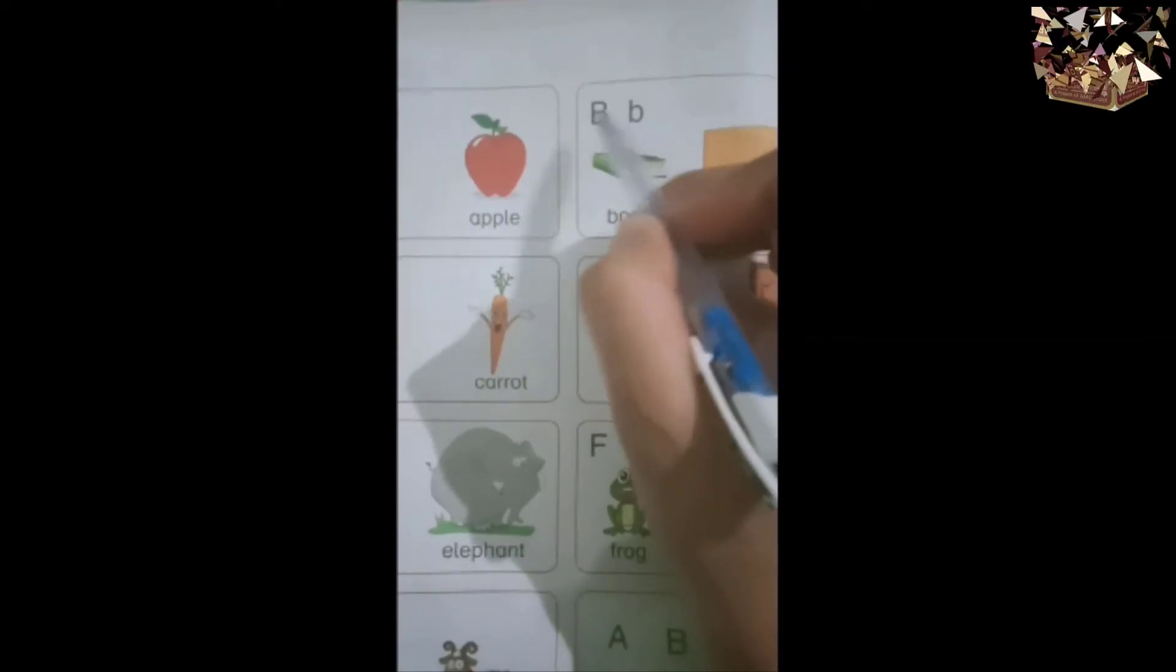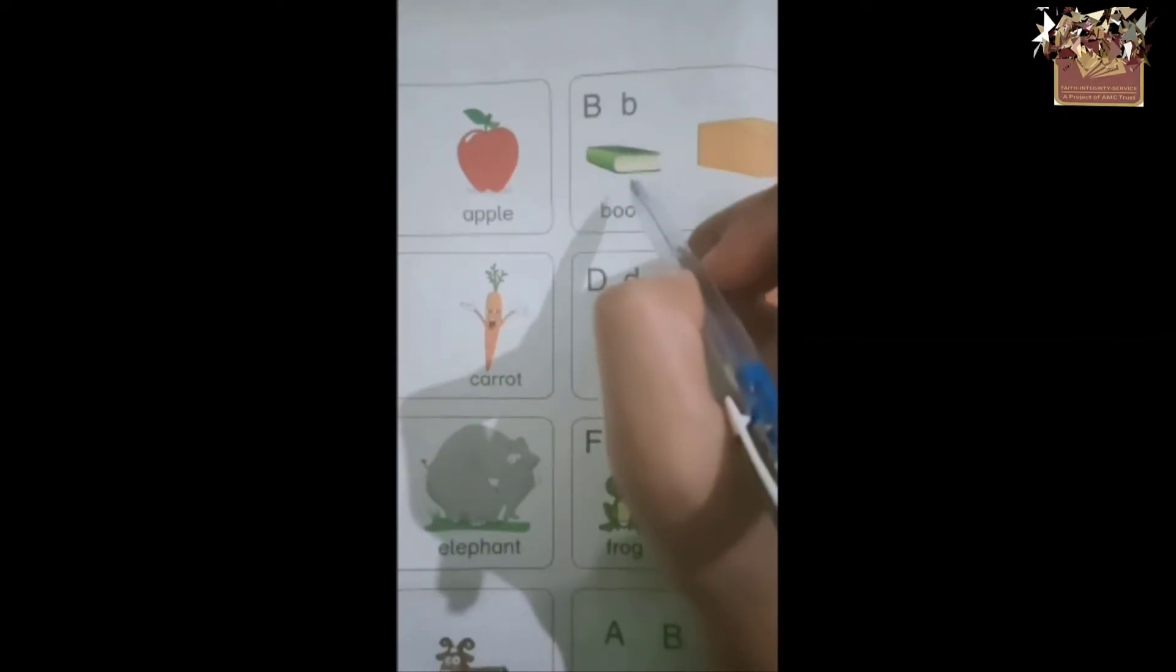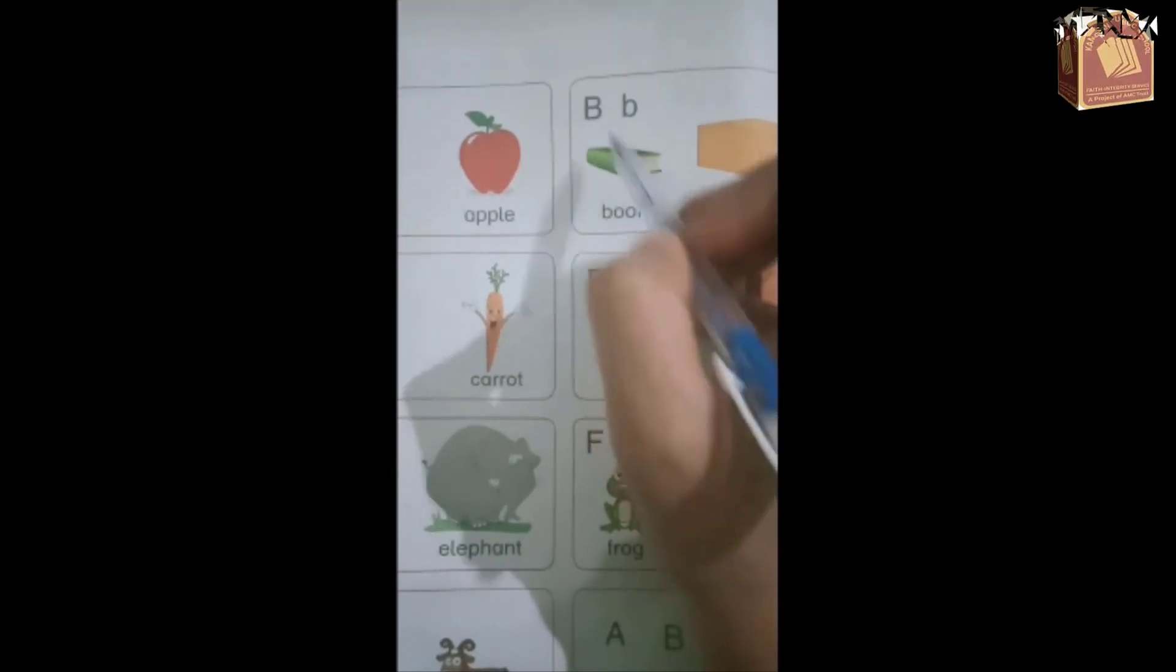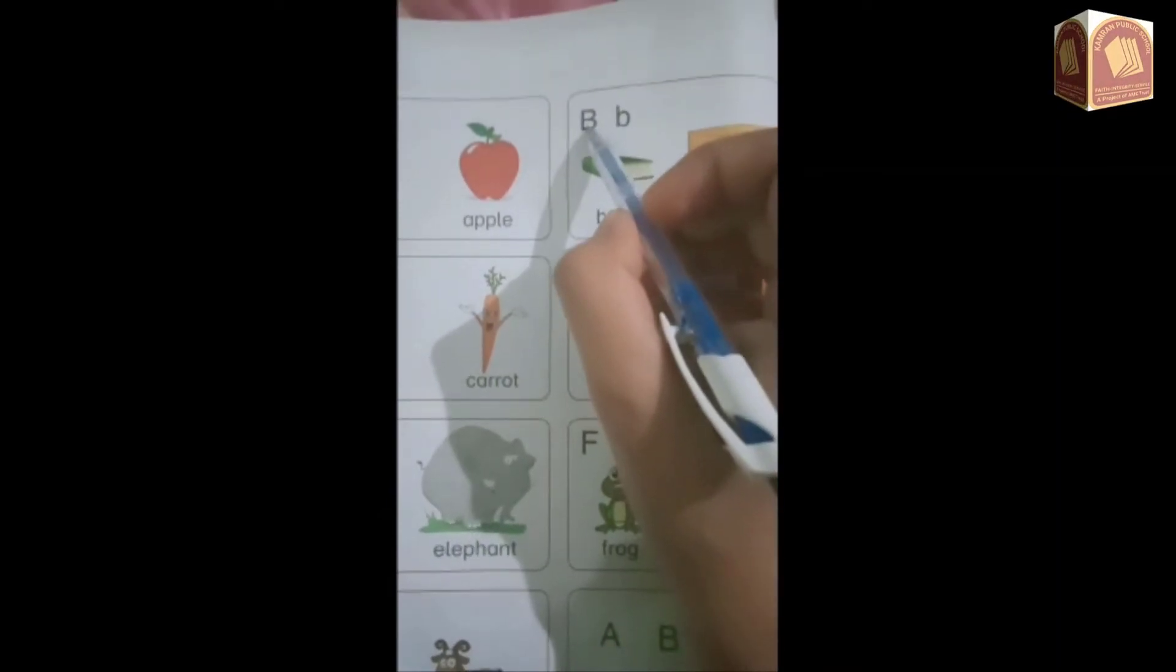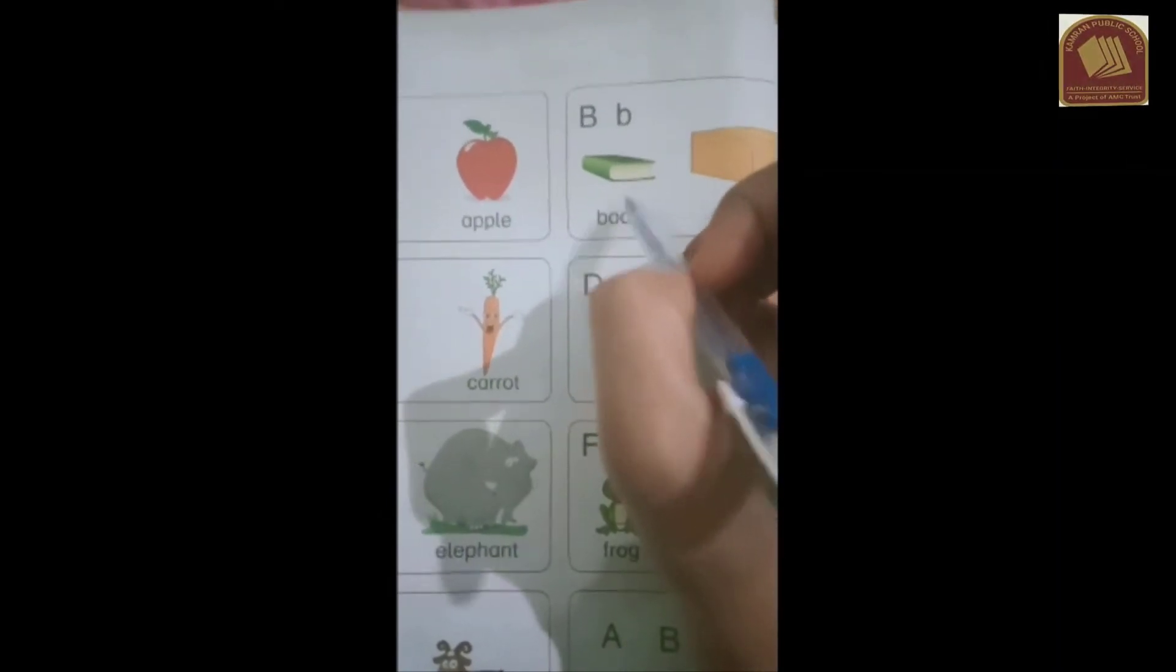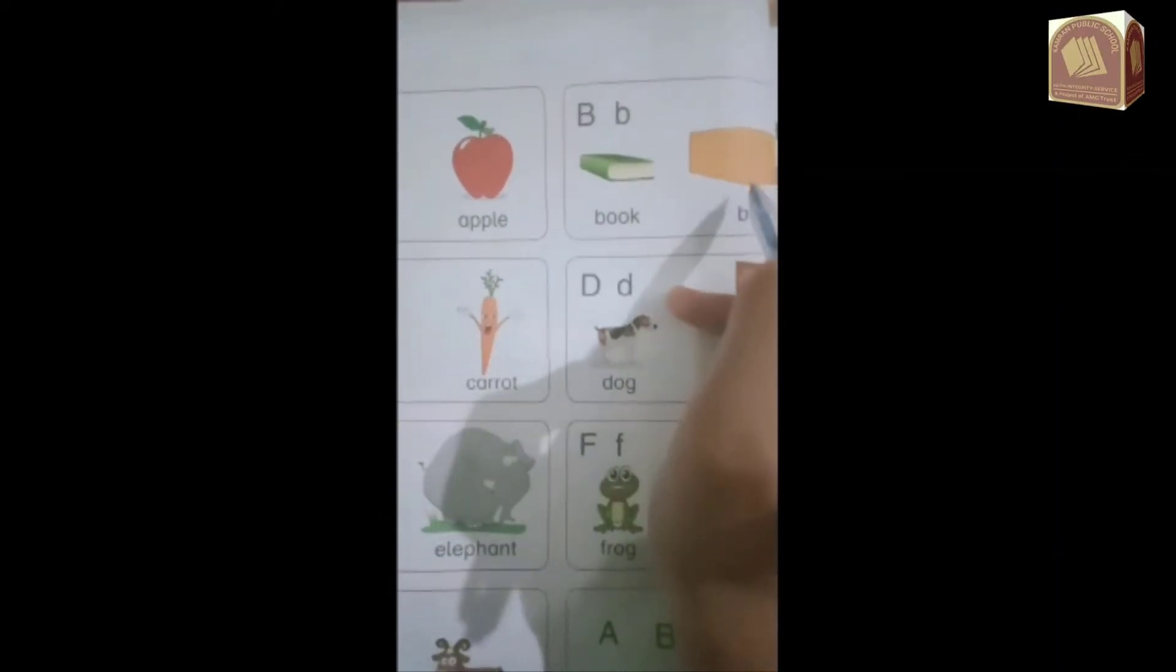B is for book, B is for box. Repeat after me: B is for book, B is for box. Very good.